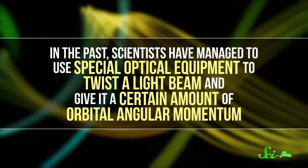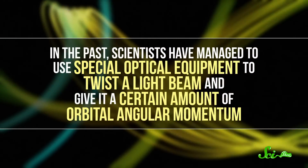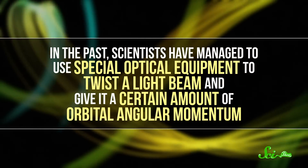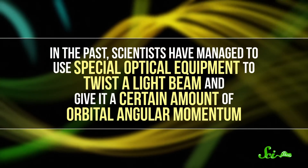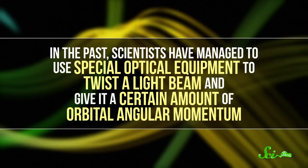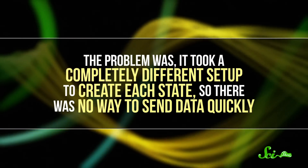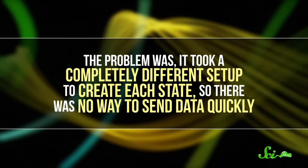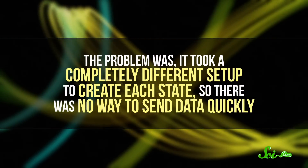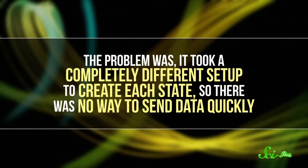So theoretically, this sounds promising. The trick is actually pulling it off. In the past, scientists have managed to use special optical equipment to twist a light beam and give it a certain amount of orbital angular momentum. The problem was, it took a completely different setup to create each state, so there was no way to send data quickly. For that, scientists would need a single setup that could produce multiple different states on command.